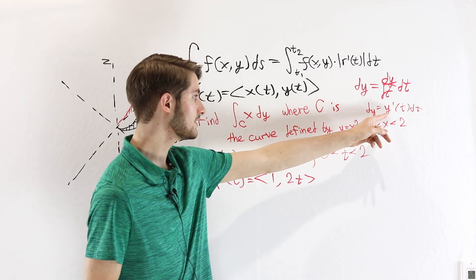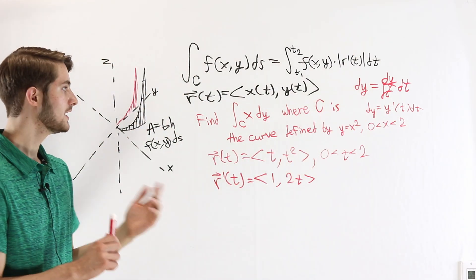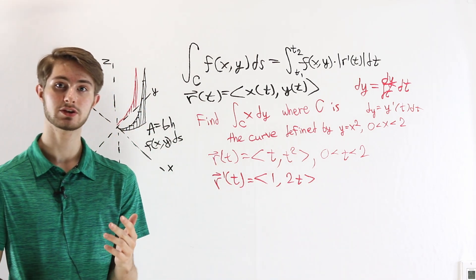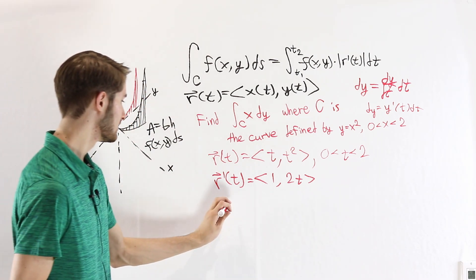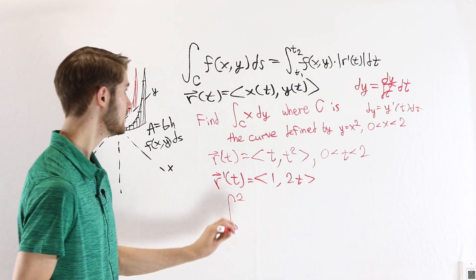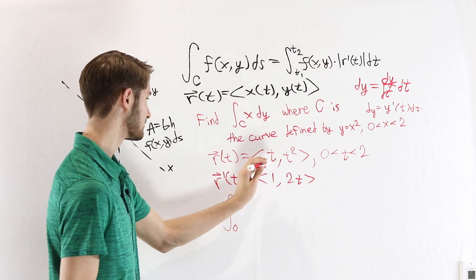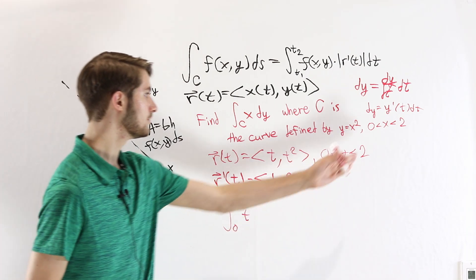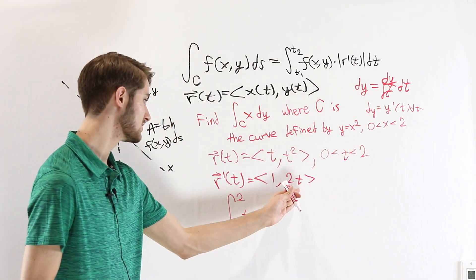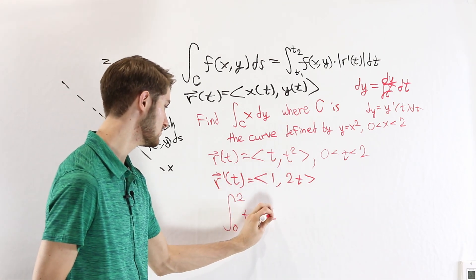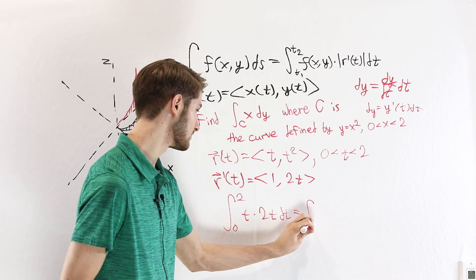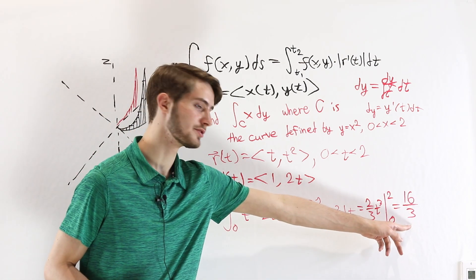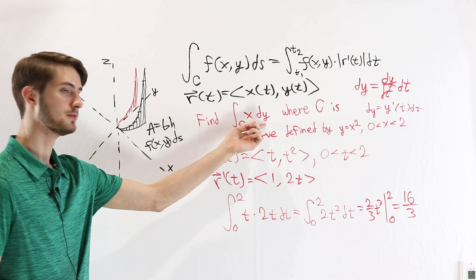Notice there's no absolute value around y prime of t, because when we look at these shadows, going backwards counts as negative — just like with an ordinary integral. In this case, we want the integral from 0 to 2 of f(x, y), which is again x equals t. But now instead of using the magnitude of r prime of t, we only need y prime of t, which is 2t. So this becomes the integral from 0 to 2 of 2t squared dt, which equals 16 thirds. That is the value of our line integral with respect to y.